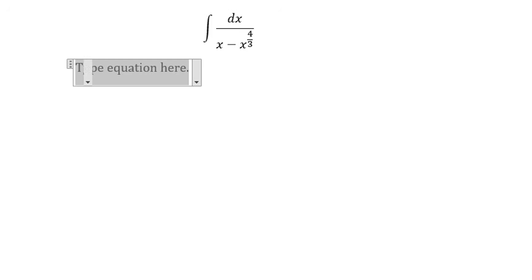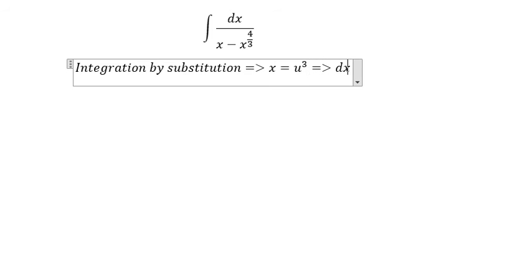In this situation, we can use integration by substitution. So we got x equals to u to the power of 3, dx equals to 3u squared du.